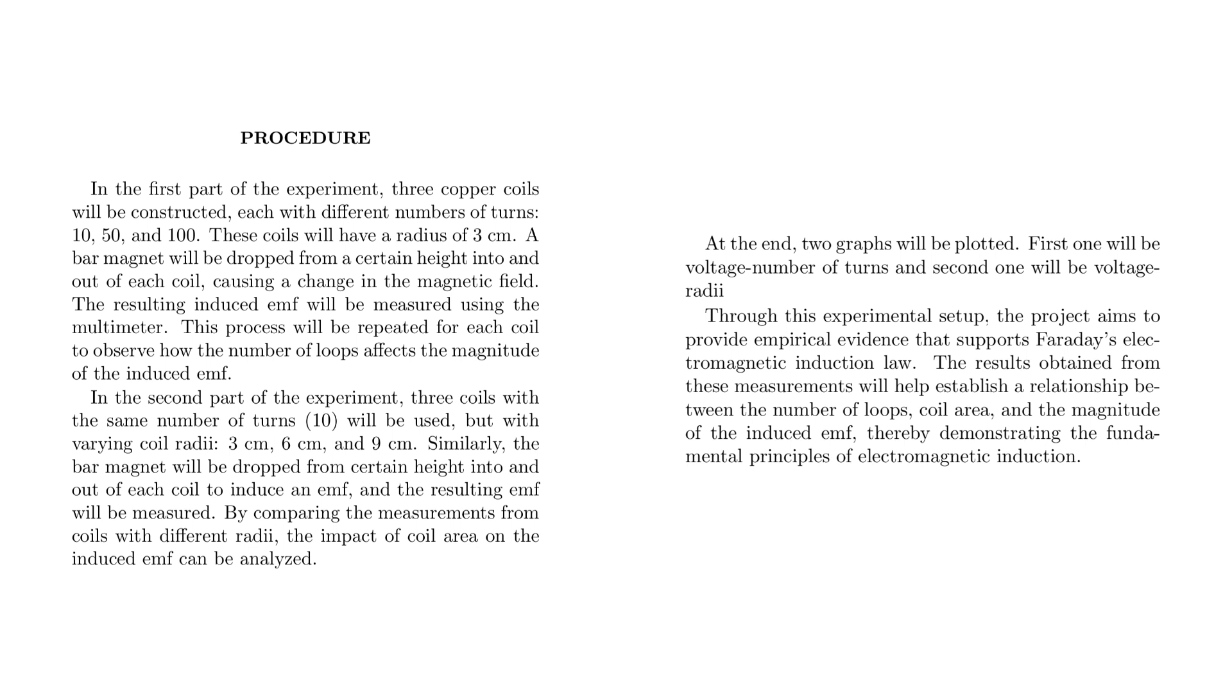In the second part of the experiment, three coils with the same number of turns, which is ten, will be used, but with varying coil radii: three centimeters, six centimeters, and nine centimeters. Similarly, the bar magnet will be dropped from a certain height into and out of each coil to induce an EMF, and the resulting EMF will be measured. By comparing the measurements from coils with different radii, the impact of coil area on the induced EMF can be analyzed.